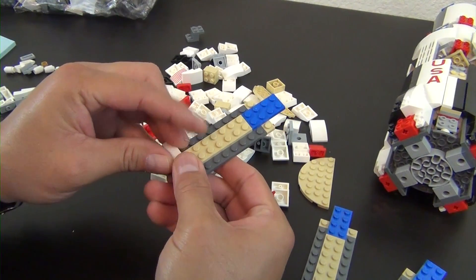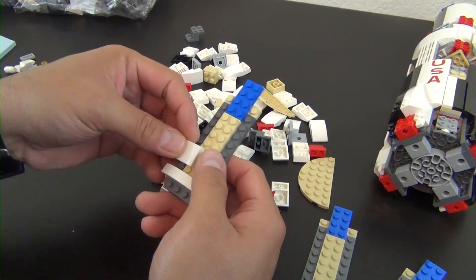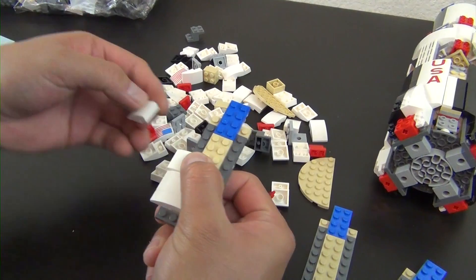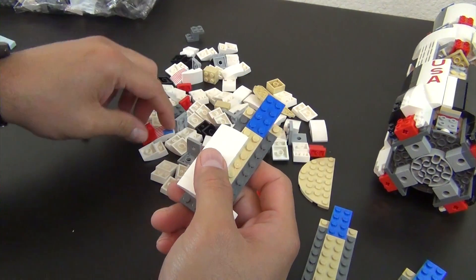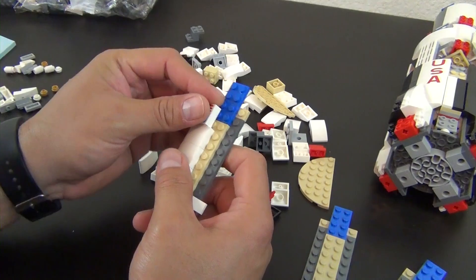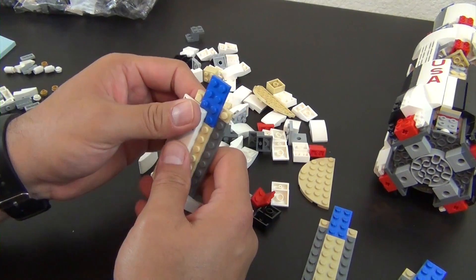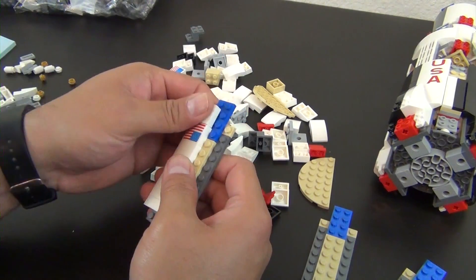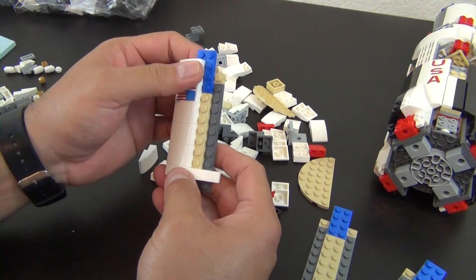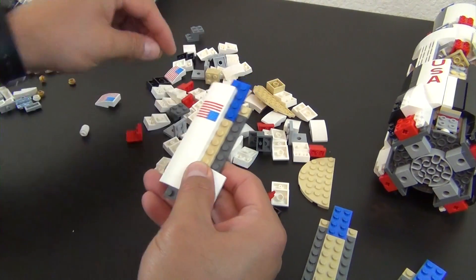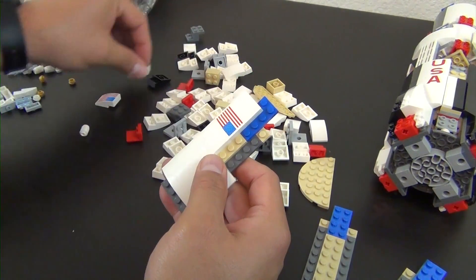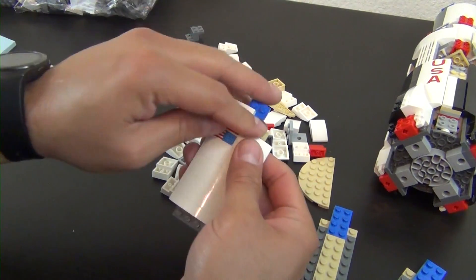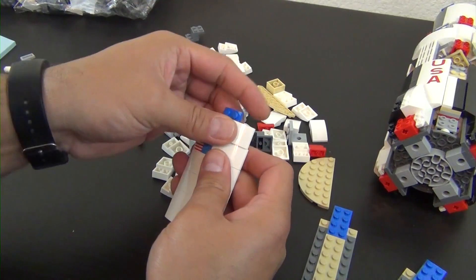So now we have one, two, three undecorated ones, and we have the U.S. flag, and then another undecorated one. And on the other side, it's all undecorated slopes. Cool.